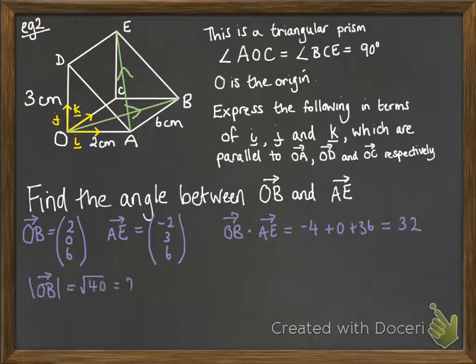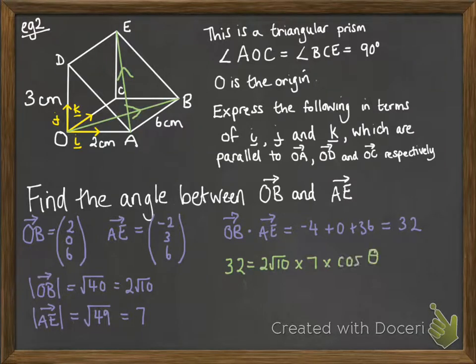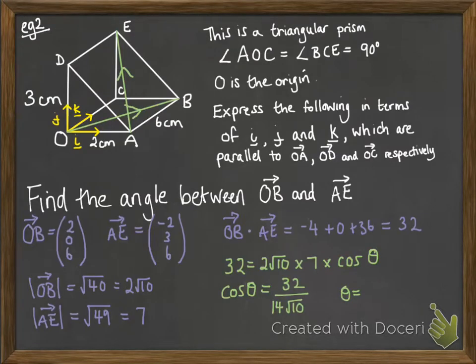We also need the modulus of each of those. And now we can put it all together in our scalar product formula and work out what cos theta would be. So theta, just hold on a second. Here you go. Answer of 43.7 degrees.